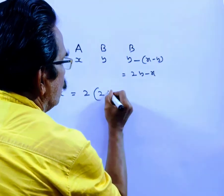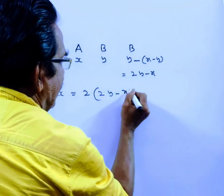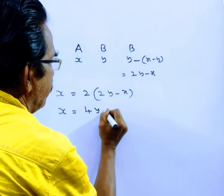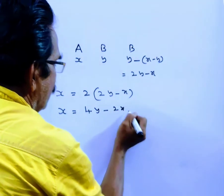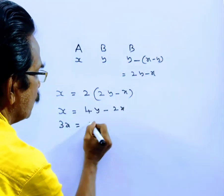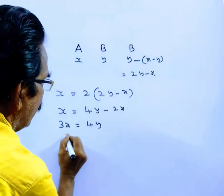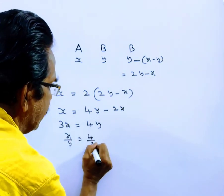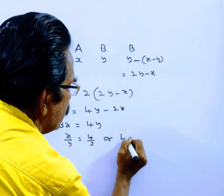So X equals 2(2Y minus X), it implies X is equal to 4Y minus 2X, or 3X is equal to 4Y. Therefore X by Y is equal to 4 by 3.